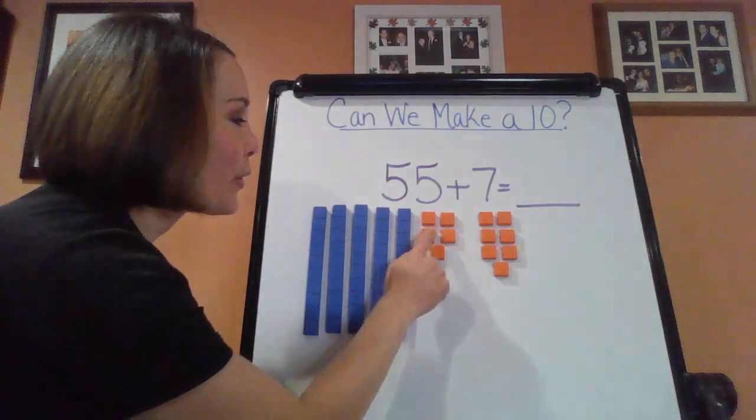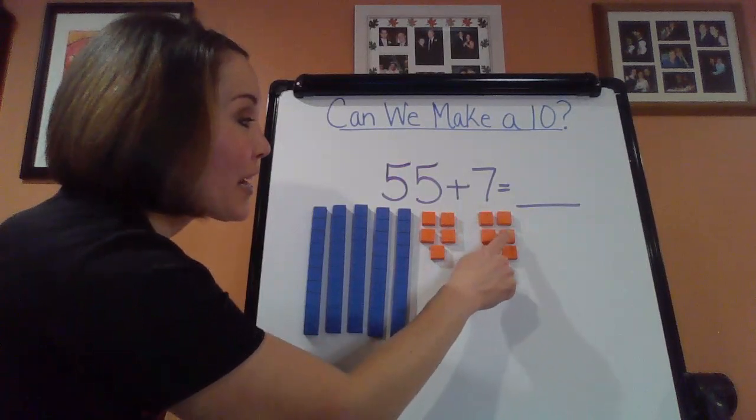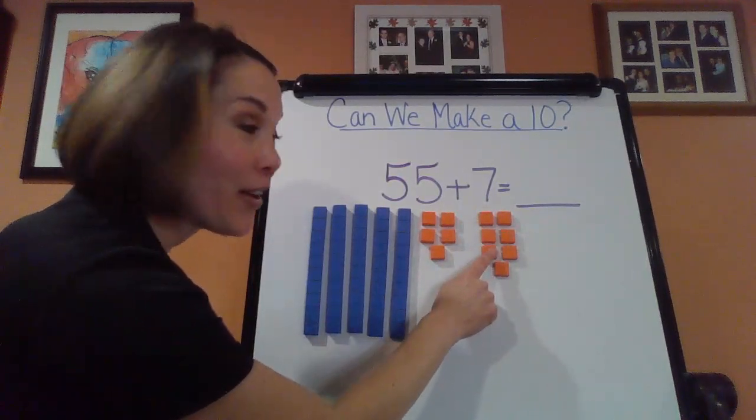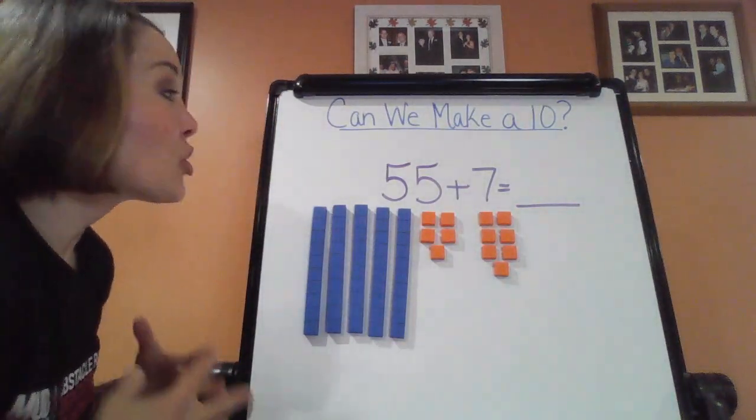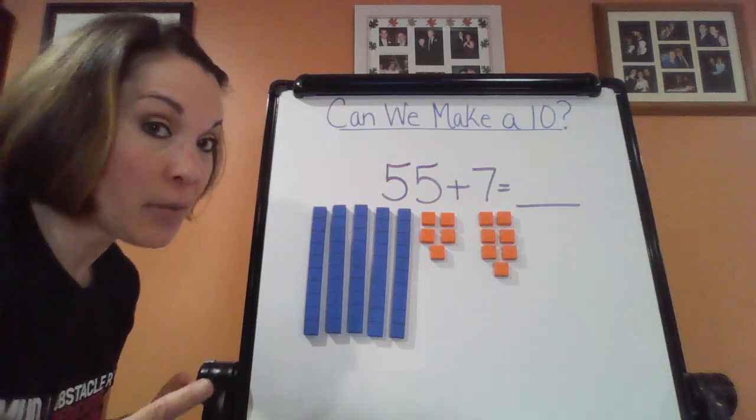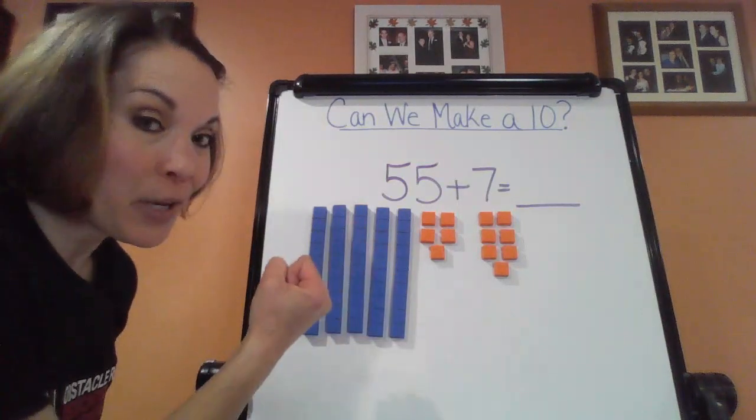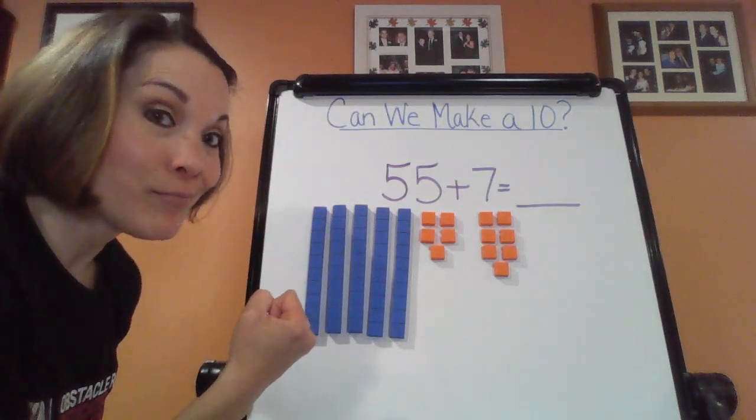One, two, three, four, five, six, seven, eight, nine, 10, 11, 12. We got 12 this time. So 12 is definitely more than 10. So what does that mean? I'm going to grab 10 of those ones and then see if we can make a 10. Let's do it.